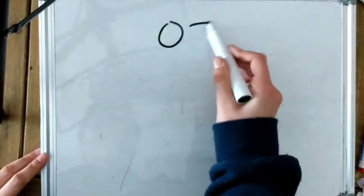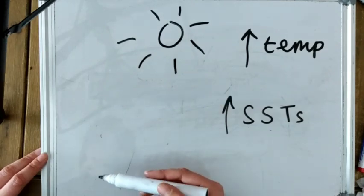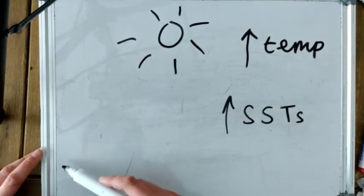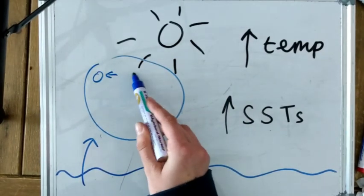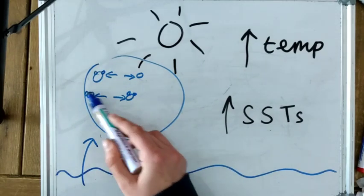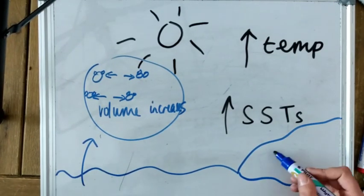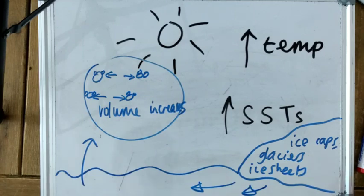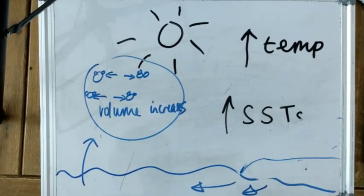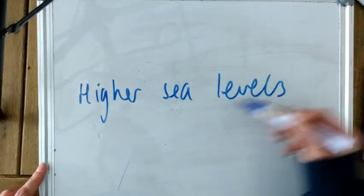Sometimes mean global temperatures increase. This could be at the end of a glacial, such as during the Flandrian transition. So air temperatures and sea surface temperatures increase. This results in sea level increase — the volume of water gets bigger because water expands when it gets warmer, taking up more space. Also, water stored on land in ice caps, glaciers and ice sheets melts, which results in the volume of water in the oceans and seas increasing. This global rise in temperatures and sea levels is called eustatic sea level rise.